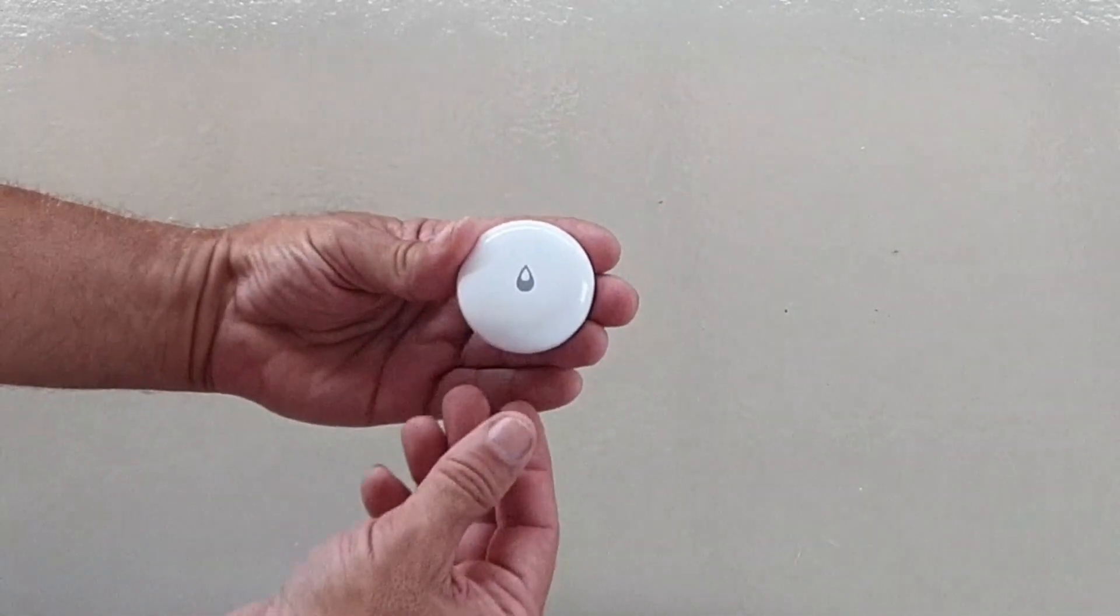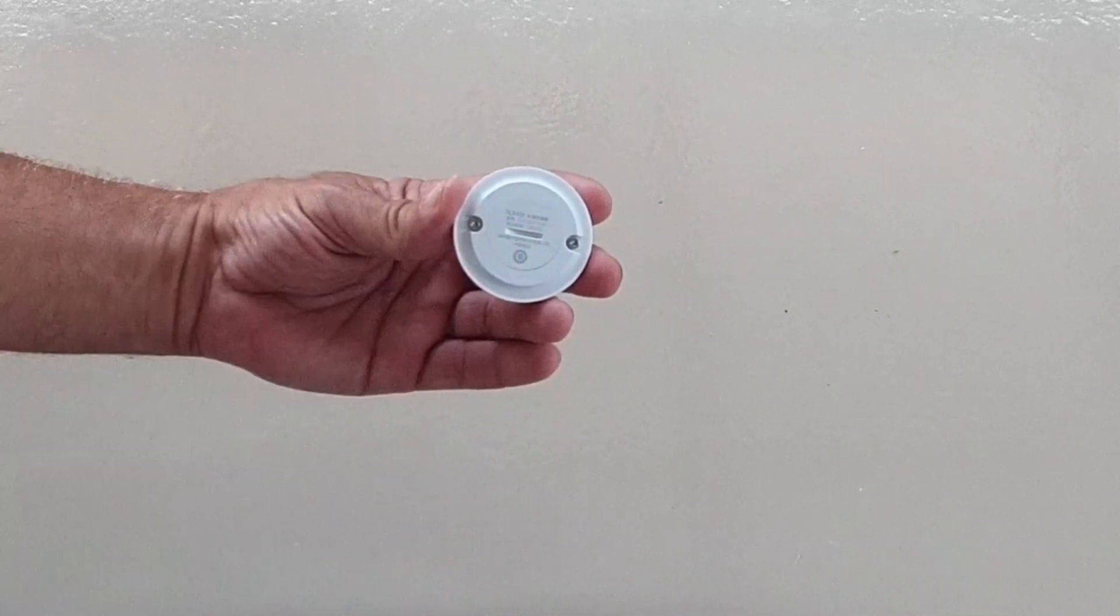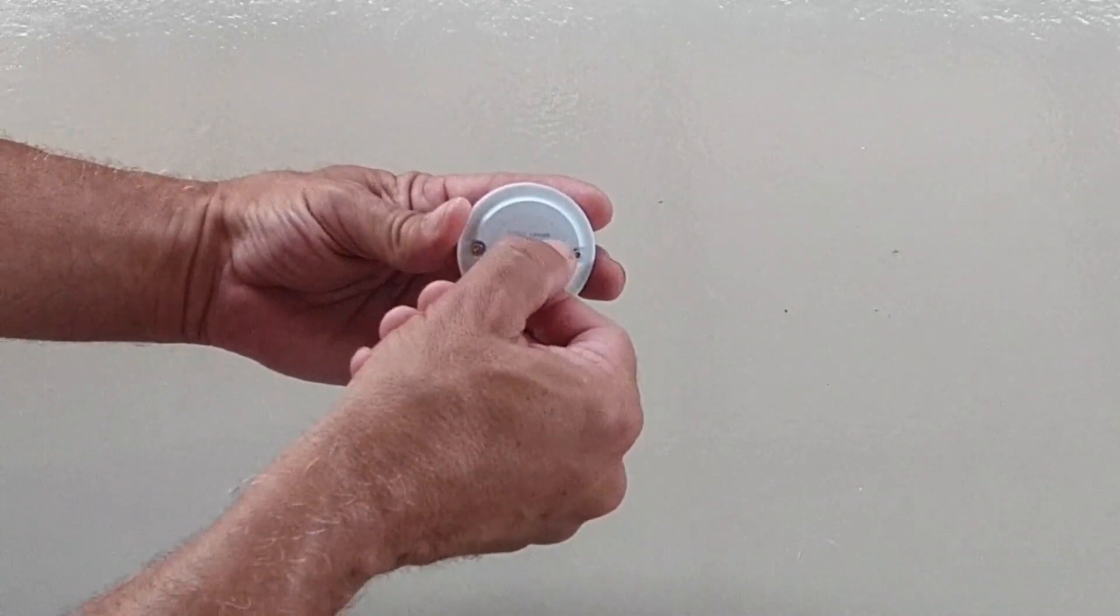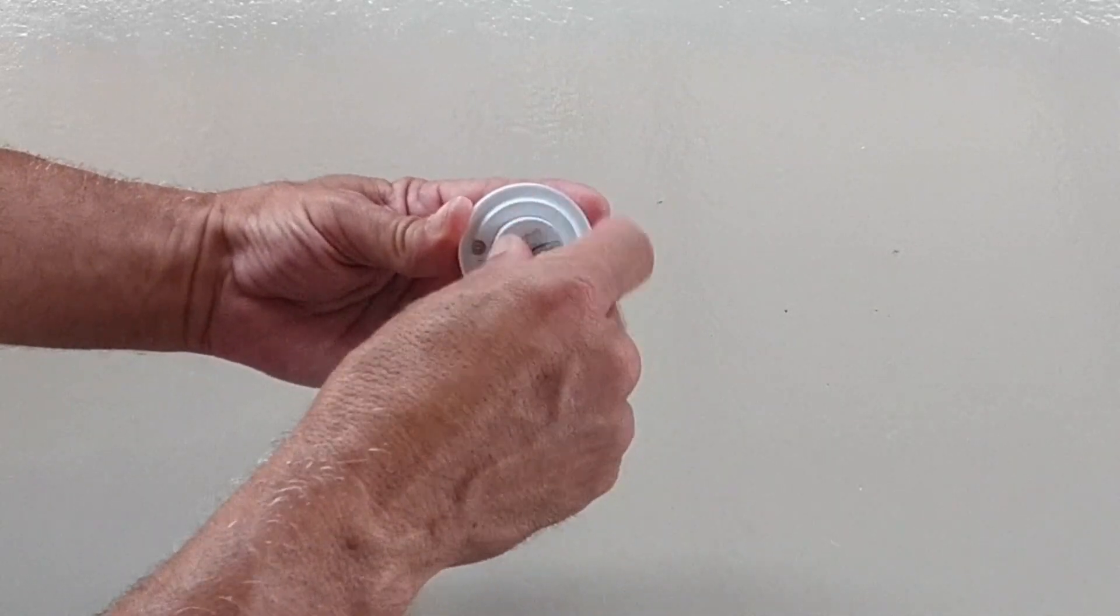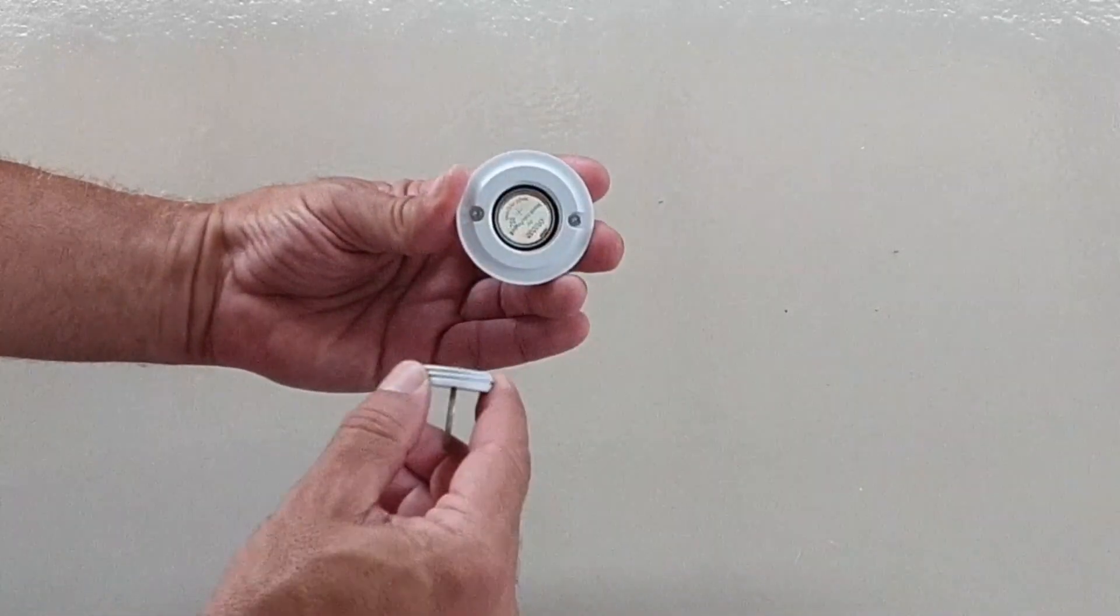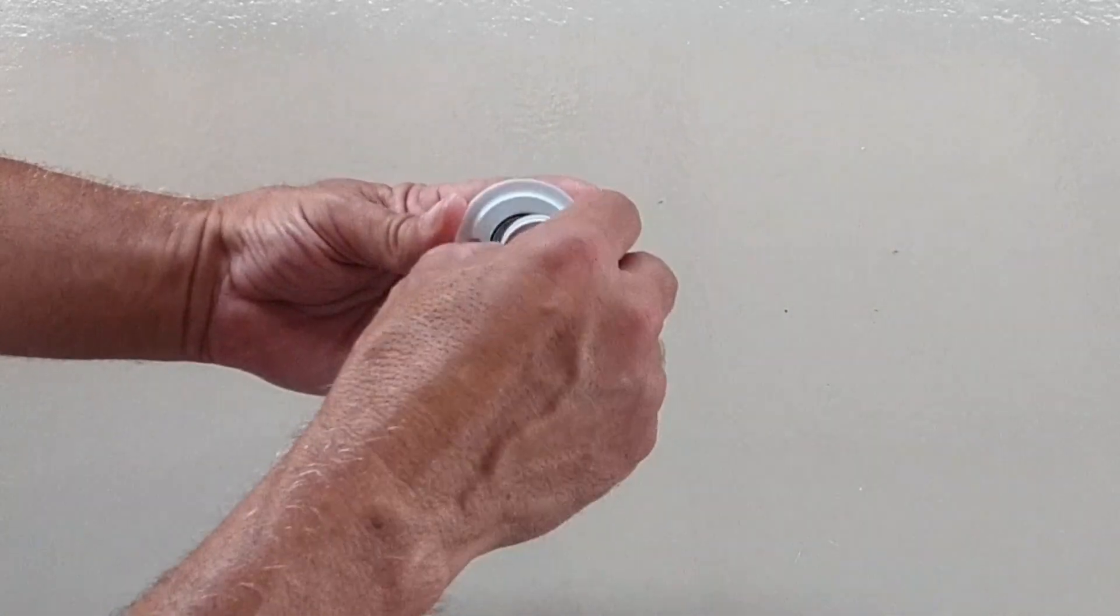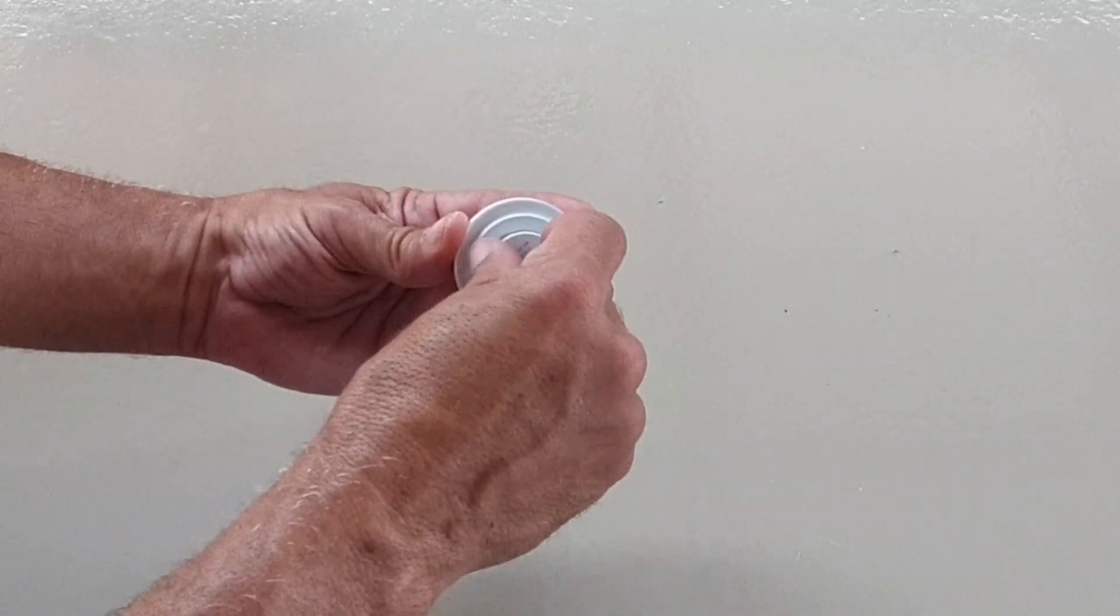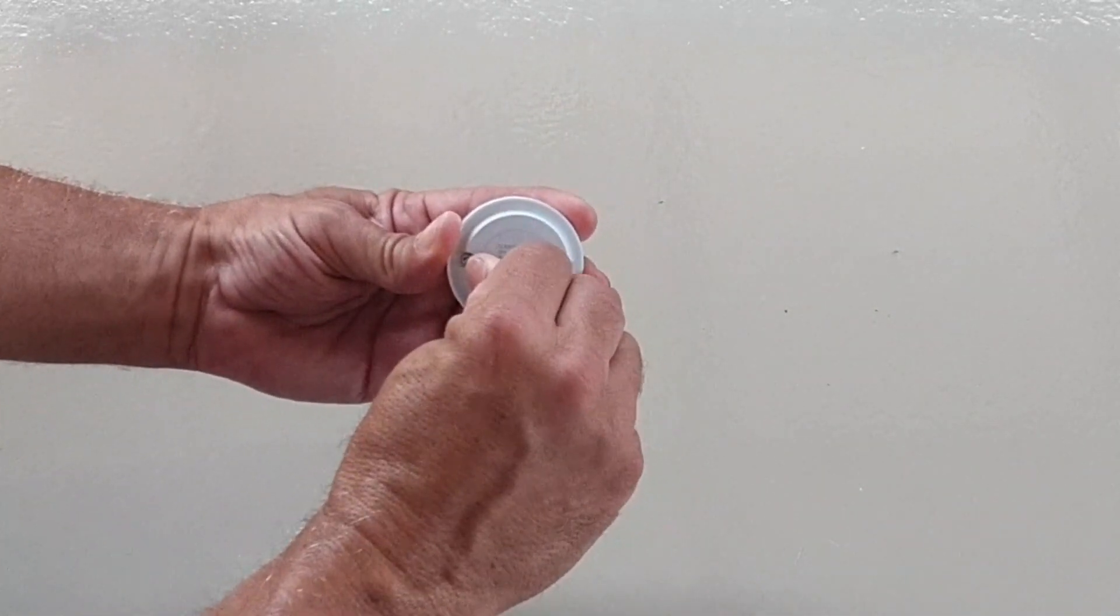On the back is where the replacement battery goes. When you need to replace it, you just take the lid off with a coin. The batteries are supposed to last two years. It takes a CR2032 battery. The whole unit is rated waterproof IP67, so there's an O-ring around the battery lid.